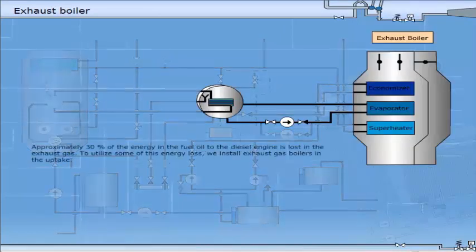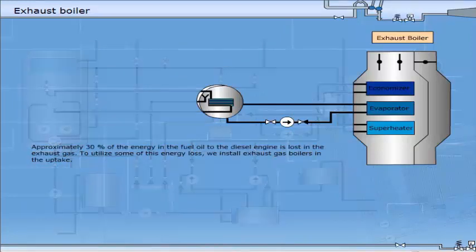Approximately 30% of the energy in the fuel oil to the diesel engine is lost in the exhaust gas. To utilise some of this energy loss, we install exhaust gas boilers in the uptake.